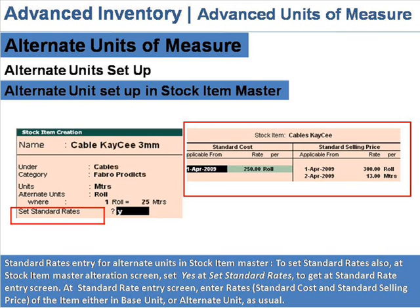Standard rates entry for alternate units in stock item master: to set standard rates, set 'Yes' at 'Set Standard Rates' to get the standard rates entry screen. At the standard rates entry screen, enter the rates of the item in either the base unit or alternate unit as required.